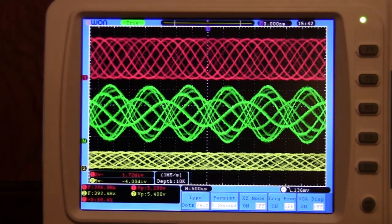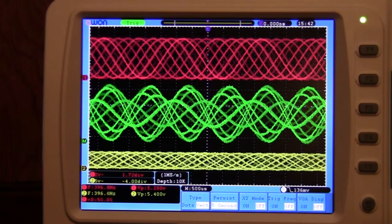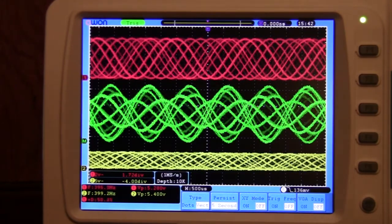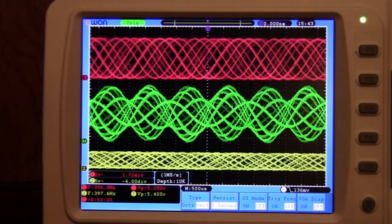Where the digital scope really shines is in its simulation of persistence. It's easier to see the minimum and maximum amplitude, actually the envelope of the standing wave ratio, and to calculate the voltage standing wave ratio.